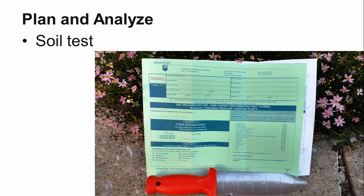First, send a soil sample off for a soil test. You need to know the soil pH, the level of nutrients, and the percent organic matter. Plants have specific growing requirements. They will not thrive if put in the wrong soil conditions.